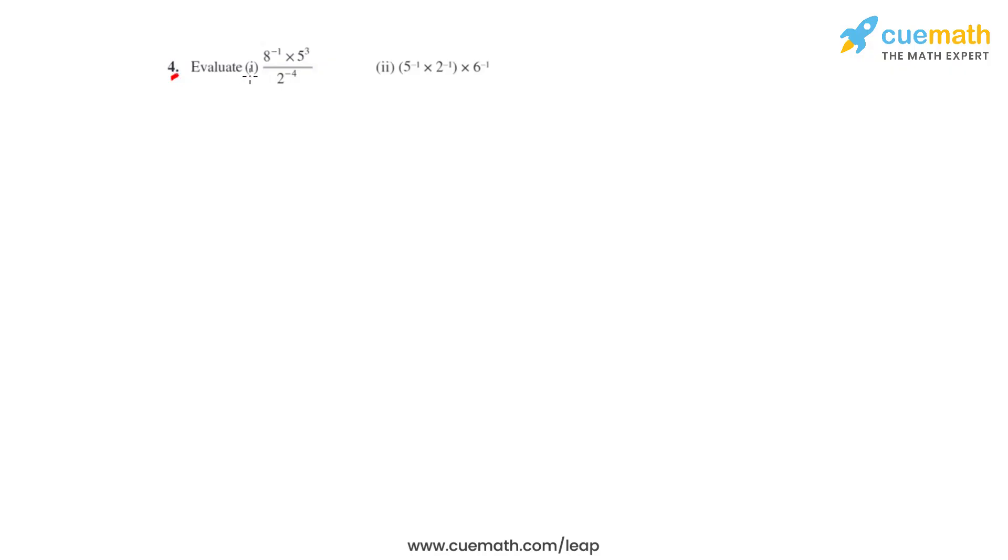Question number 4 says to evaluate the following two bits, so we'll start with the first one which says 8 raised to negative 1 times 5 raised to 3, whole divided by 2 raised to negative 4.